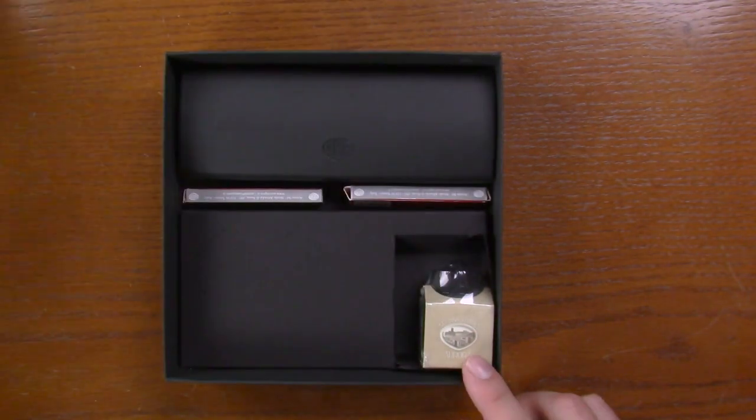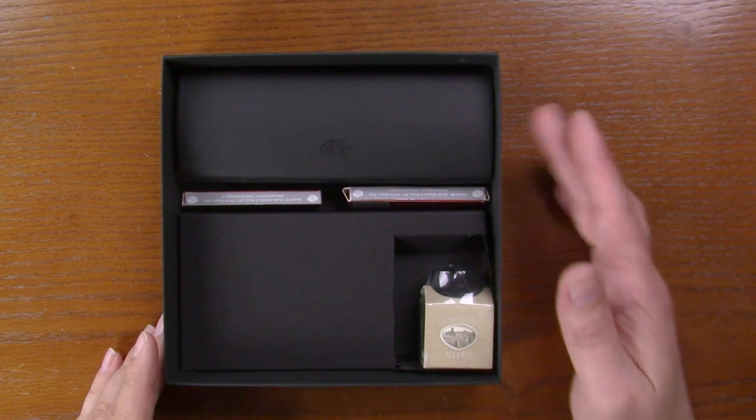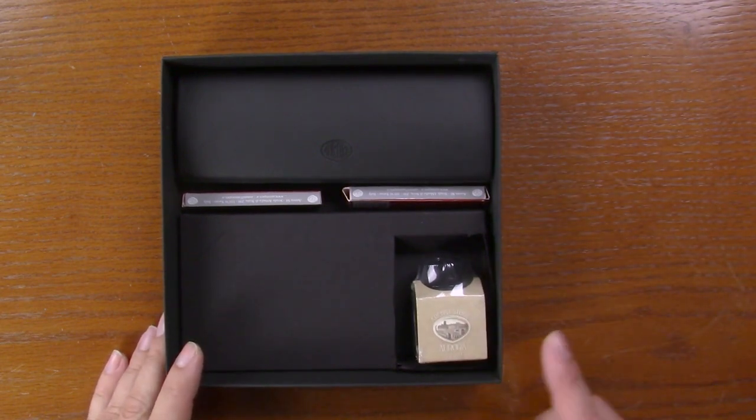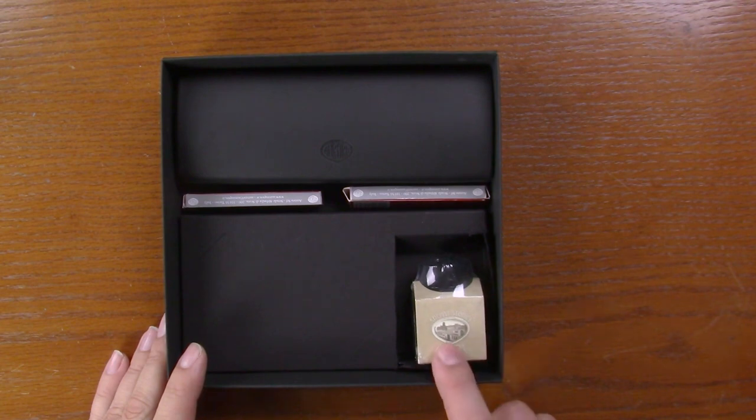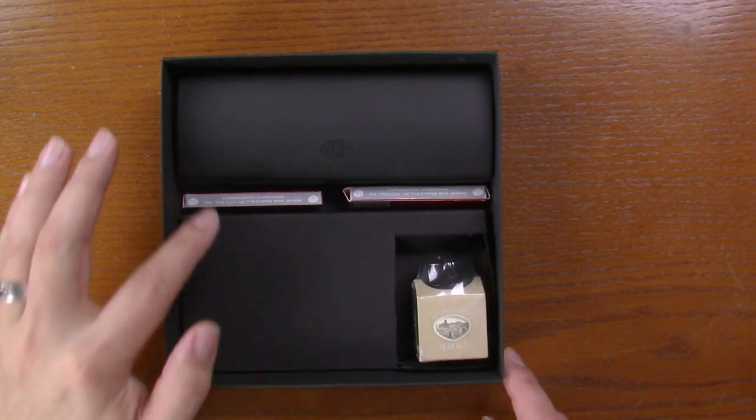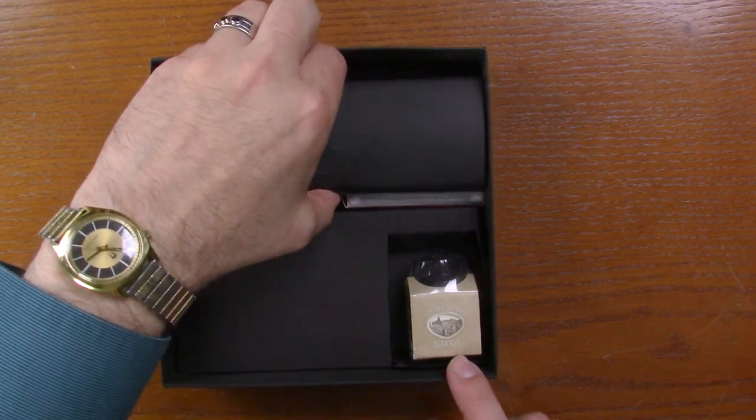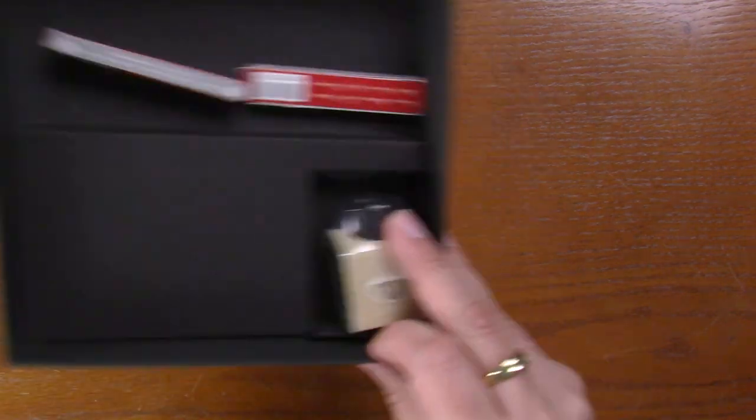We have the full amount. We've got a box, we've got a nice bottle of Aurora Black which has got a little cardboard vintage looking sleeve on it. Comes with a couple cartridges, Aurora cartridges and a converter. And it comes with a box.